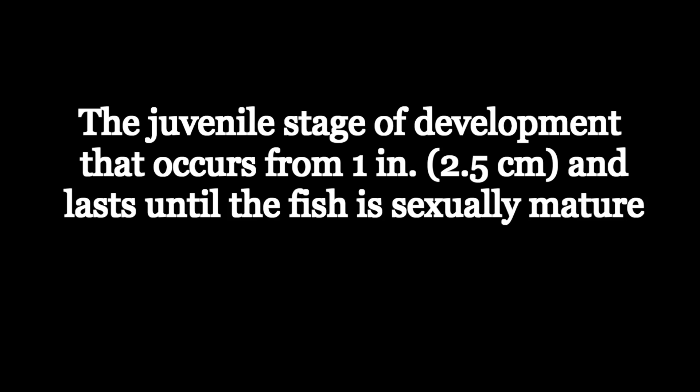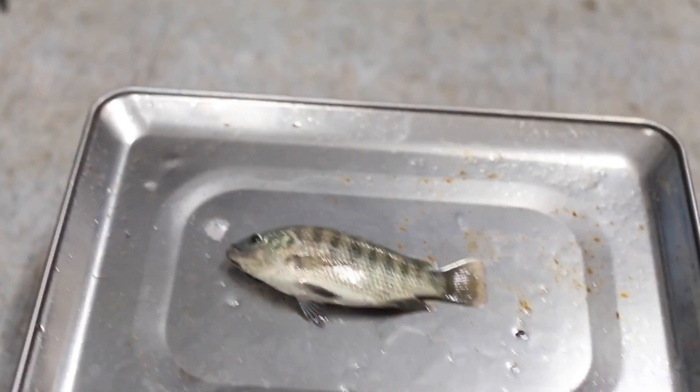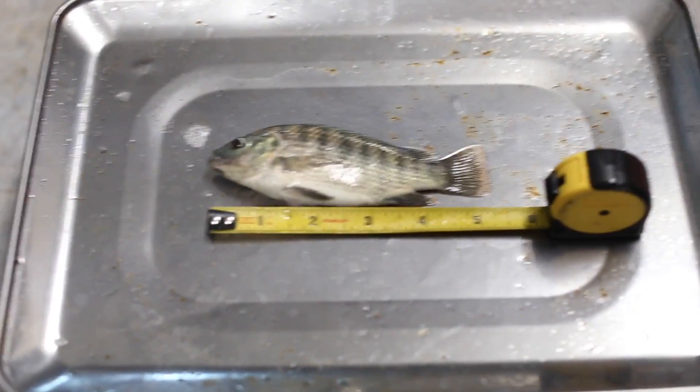Fingerling is another term commonly used in aquaponics. The fingerling is defined as the juvenile stage of development that occurs from one inch and lasts until the fish is sexually mature. This is a generic term to give us common ground. Anything bigger than an inch is a fingerling — the juvenile stage up until it reaches sexual maturity. For tilapia, we're talking about somewhere between four and six months, depending on the species.